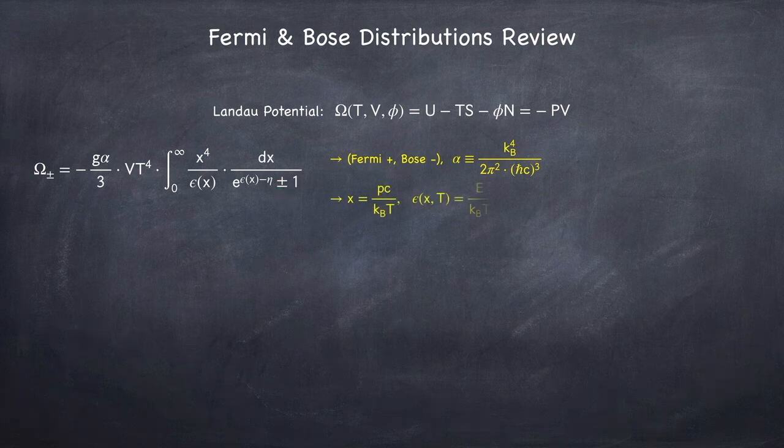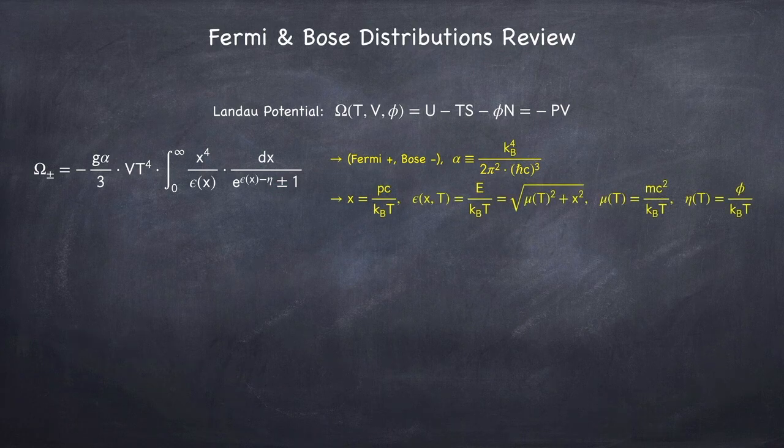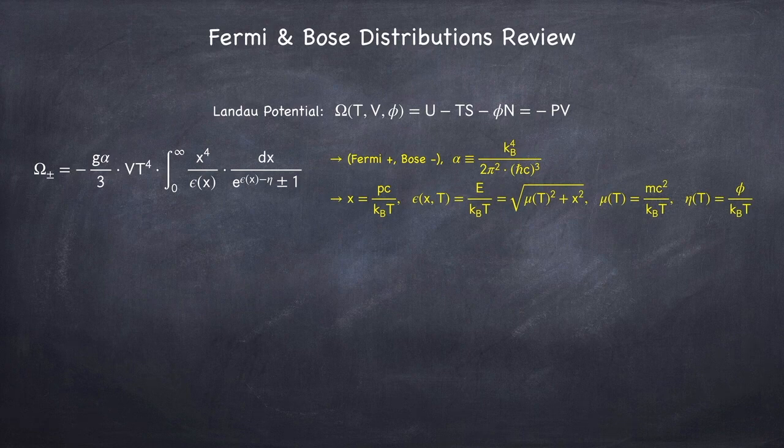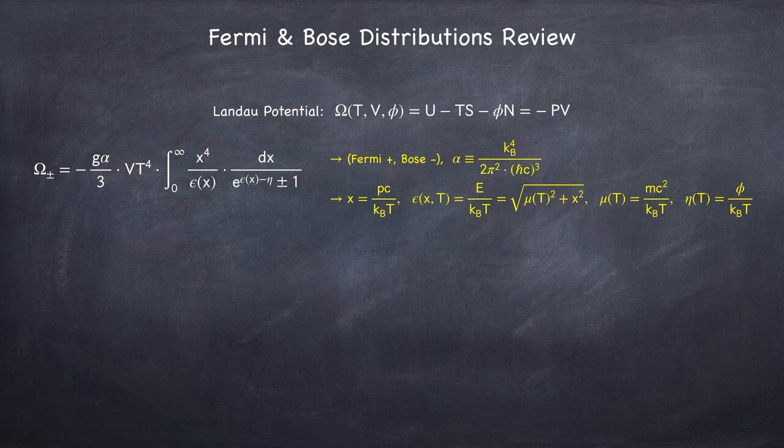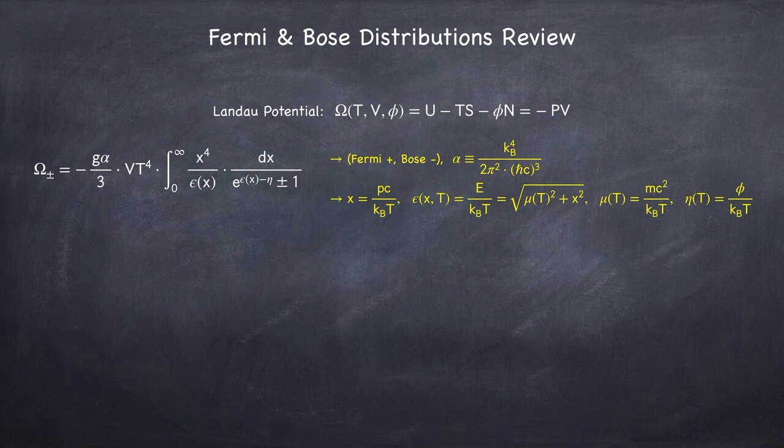x in this integral is just the momentum divided by temperature. The potential does not actually depend on x as it's being integrated out. Epsilon is the energy divided by temperature. Mu is the mass divided by temperature. And eta is the chemical potential divided by temperature.